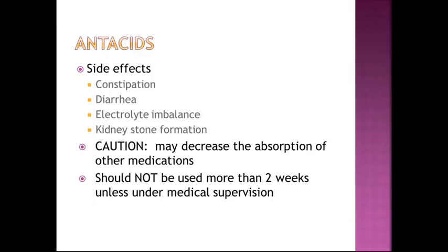Medications of particular note are antibiotics and digoxin, a cardiac medication — antacids can inhibit their absorption. Antacids may interfere with other drugs in three different ways: they increase the gastric pH, causing a decrease in absorption of weakly acidic drugs and a decrease in drug effect — this is how it affects digoxin. The second way is by absorbing or binding drugs to their surface, resulting in a decrease in the amount of drug absorbed into the bloodstream so it can't get through the gastric lining.